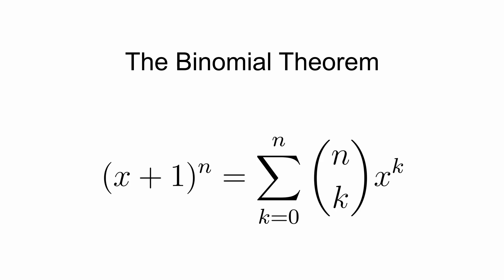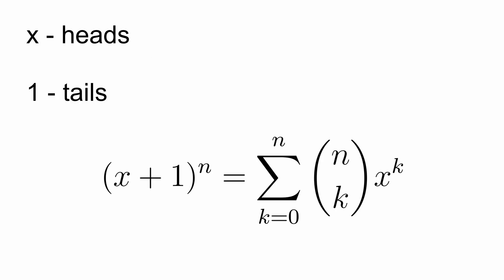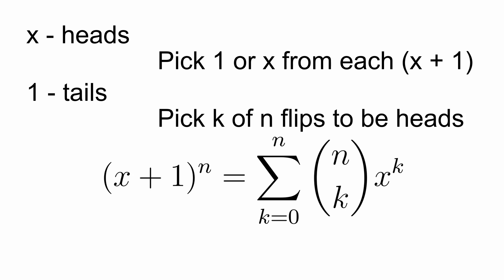If you have x plus 1 to the n, you can let x model heads and 1 model tails. And if you notice that I already talked about this, this is the combinatorial proof I started with. You have n flips and k of them are heads, and then you only have to pick k of n flips to be heads, and that is naturally the coefficient of x to the k.